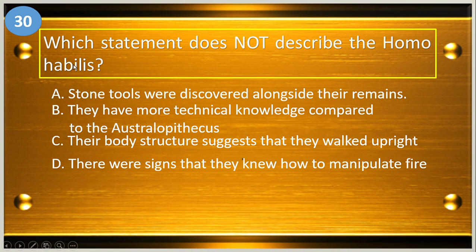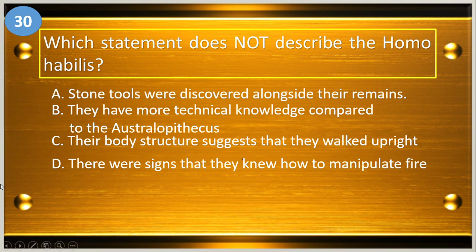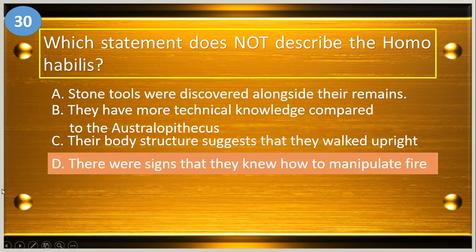Number thirty: which statement does not describe the Homo habilis? A, stone tools were discovered alongside their remains; B, they have more technical knowledge compared to Australopithecus; C, their body structure suggests that they walk upright; and D, there were signs that they knew how to manipulate fire. The answer is letter D.